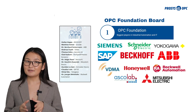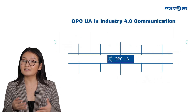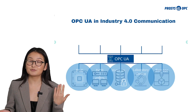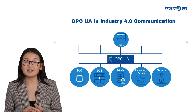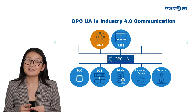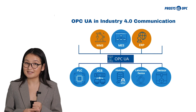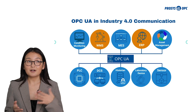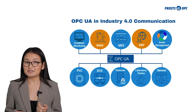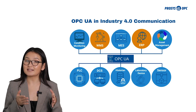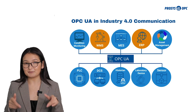With OPC UA you can connect various sensors and devices to various IT systems such as MES, WMS, ERP, condition monitoring, asset management, and many others. All in all, this is the bread and butter of OPC UA as it is recognized by many automation vendors from all over the world.